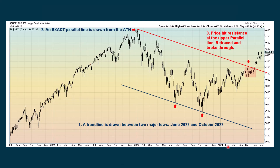This is a trend channel I keep talking about in the daily video but haven't been showing. I started by looking at two lows set back in 2022 and drew a trend line to match those up. Then I drew a parallel line going back to the all-time high set in early 2022. As we were going up, it looked like that area was going to provide overhead resistance — and it did a couple of times. But then we ended up breaking through. Now we're far away from this trend line, so I haven't been showing it. If we start to fall and come back down to this line, I'll start showing it again.